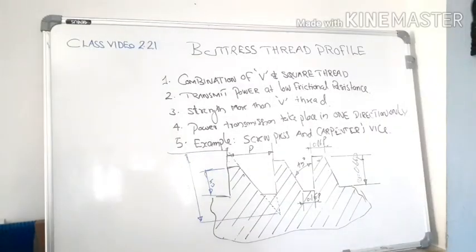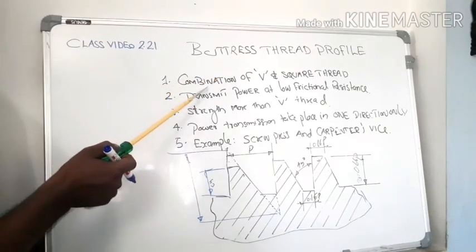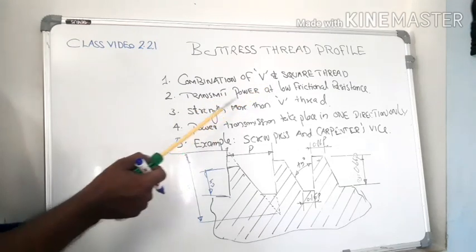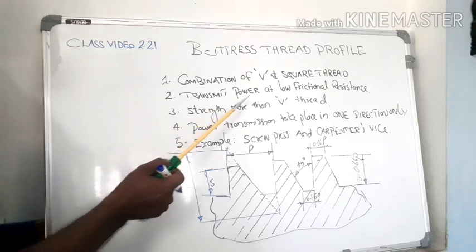Dear students, in this class we have to discuss another type of thread that's named buttress thread. It is a combination of V and square thread. Next specialty is it is used to transmit power at low frictional resistance.